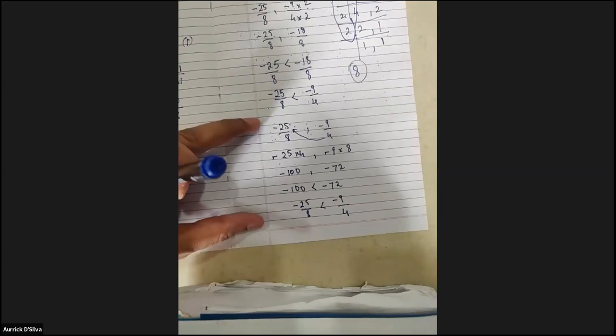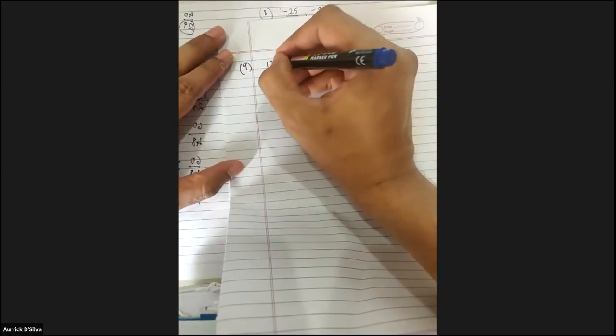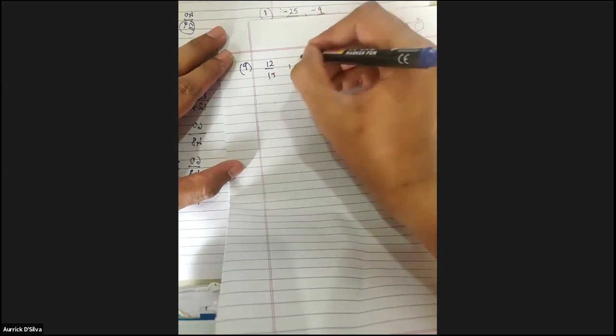The reason I didn't show this to you all earlier is because some schools will not allow it, so we have to be perfect in the first method. This shortcut we can learn anytime. Let me show you another sum where I'll discuss both methods. The ninth sum is 12 upon 15 and 3 upon 5.